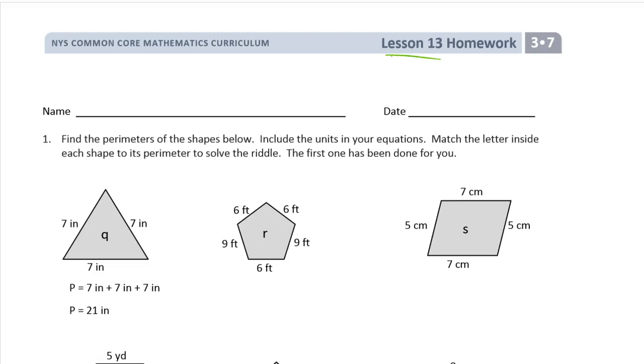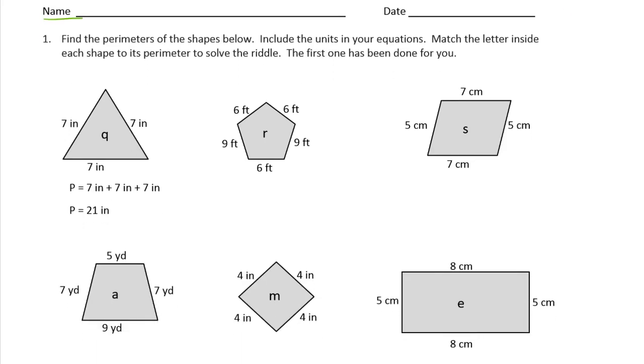This is the homework for lesson 13, module 7 of third grade. Please write your name here first. You don't want to forget it later and turn in your homework with no name on it. Find the perimeters of the shapes below. Include the units in your equations. Match the letter inside each shape to its perimeter to solve the riddle. The first one has been done for you.